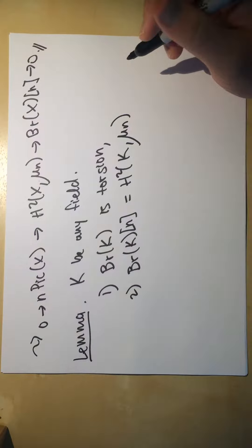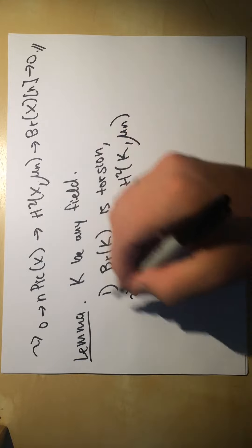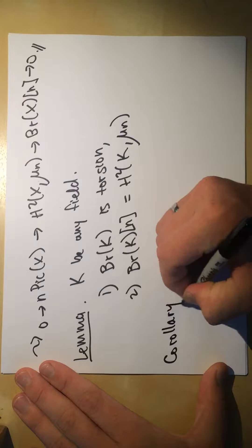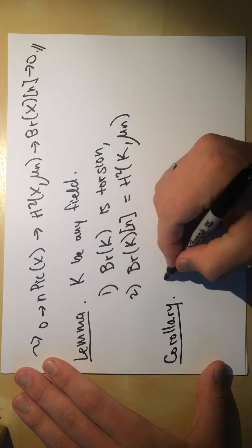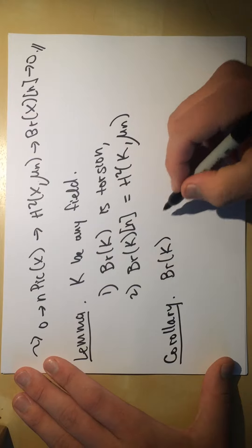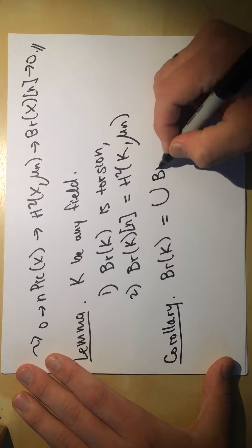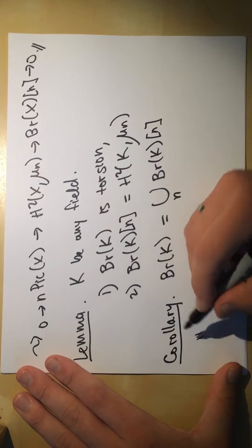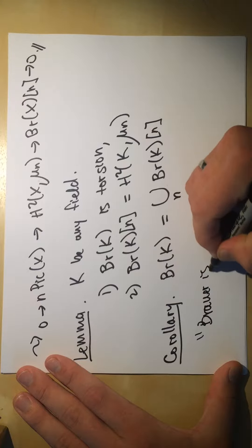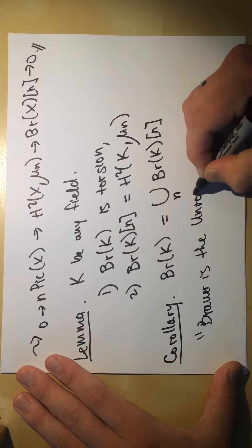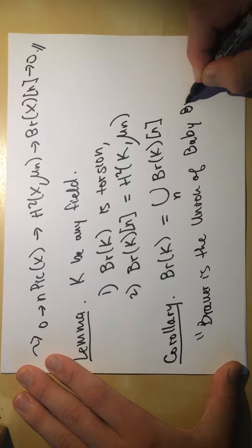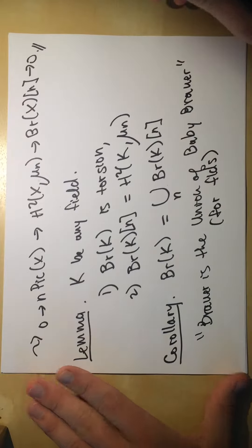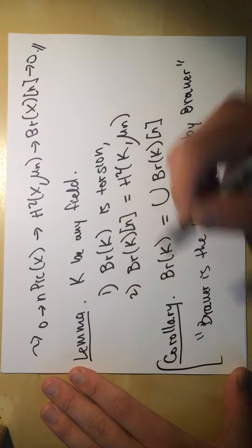As a consequence of claims one and two, we get that the Brauer group is the union of baby Brauer groups — Br(k) equals the union over n of the baby Brauer groups. This holds for fields.